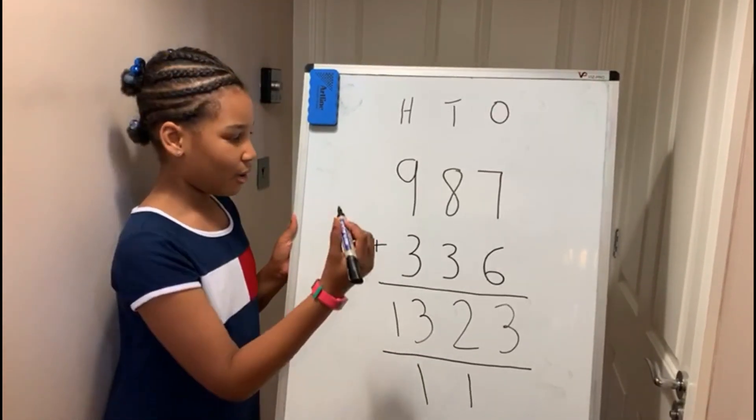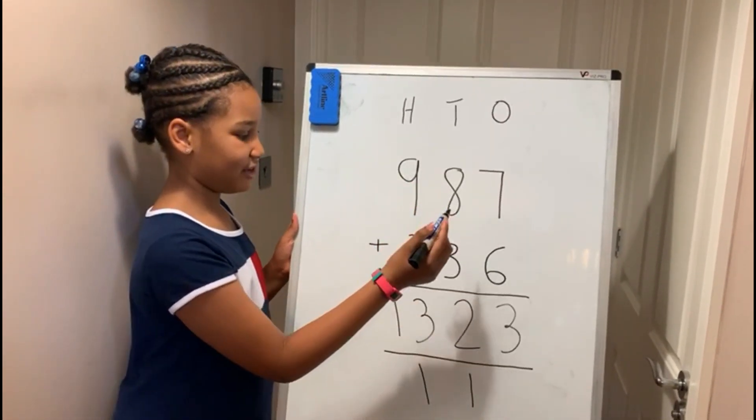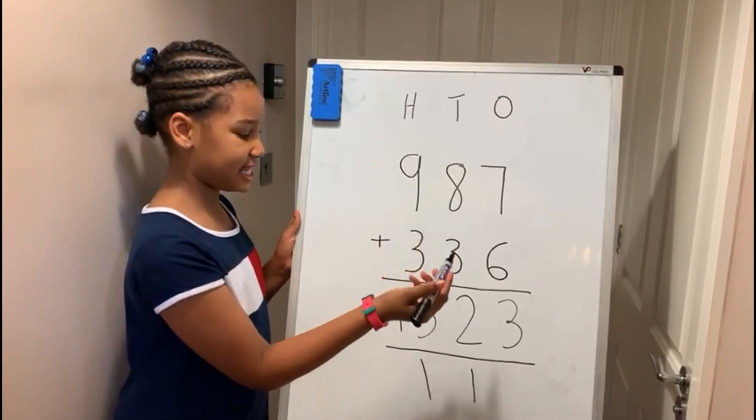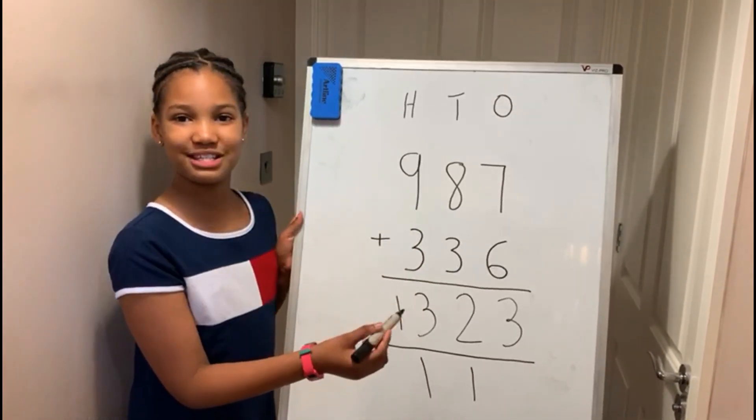So there's your answer. Nine hundred and eighty-seven add three hundred and thirty-six is one thousand three hundred and twenty-three.